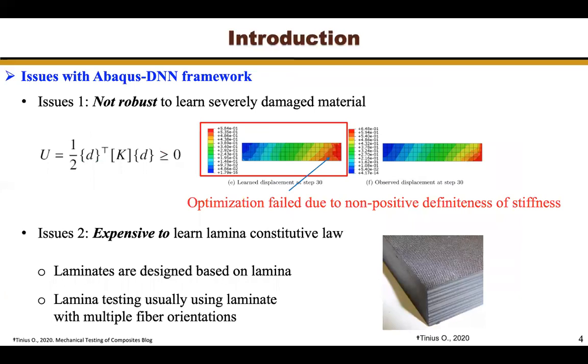The first issue is that Abaqus-DNN is not robust enough to learn severely damaged material. This is because damage in the material causes degradation of material stiffness. A severely damaged material might have stiffness diagonal terms become very small. When applying Abaqus-DNN to learn such material, the optimizer might shift diagonal terms of the stiffness to have negative value. Then this causes the strain energy density no longer positive. That is physically does not make sense, and Abaqus will terminate the analysis.